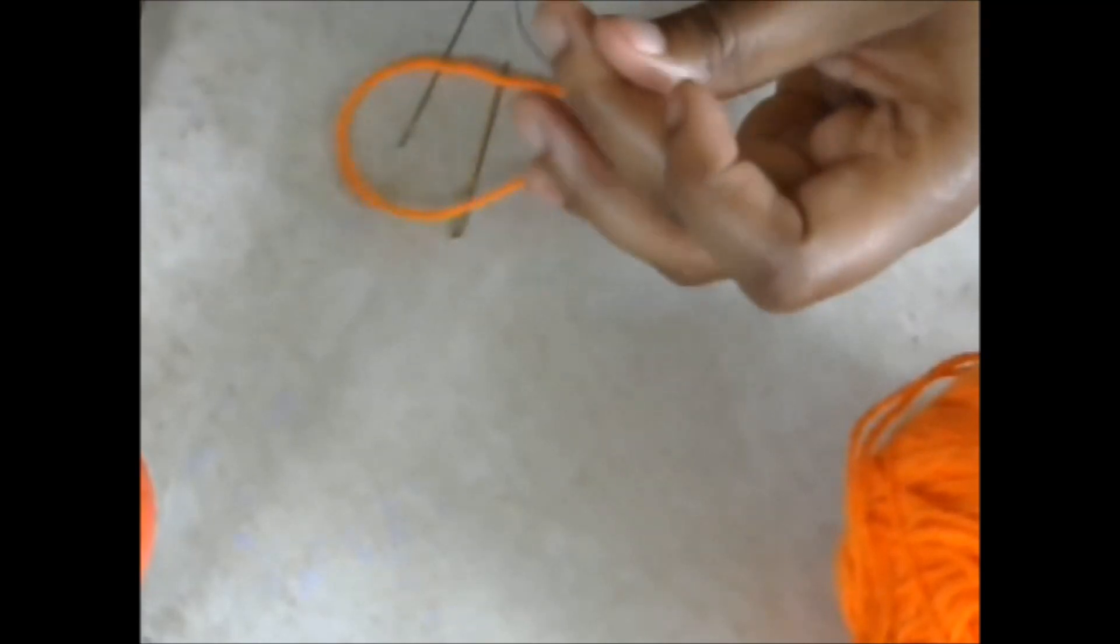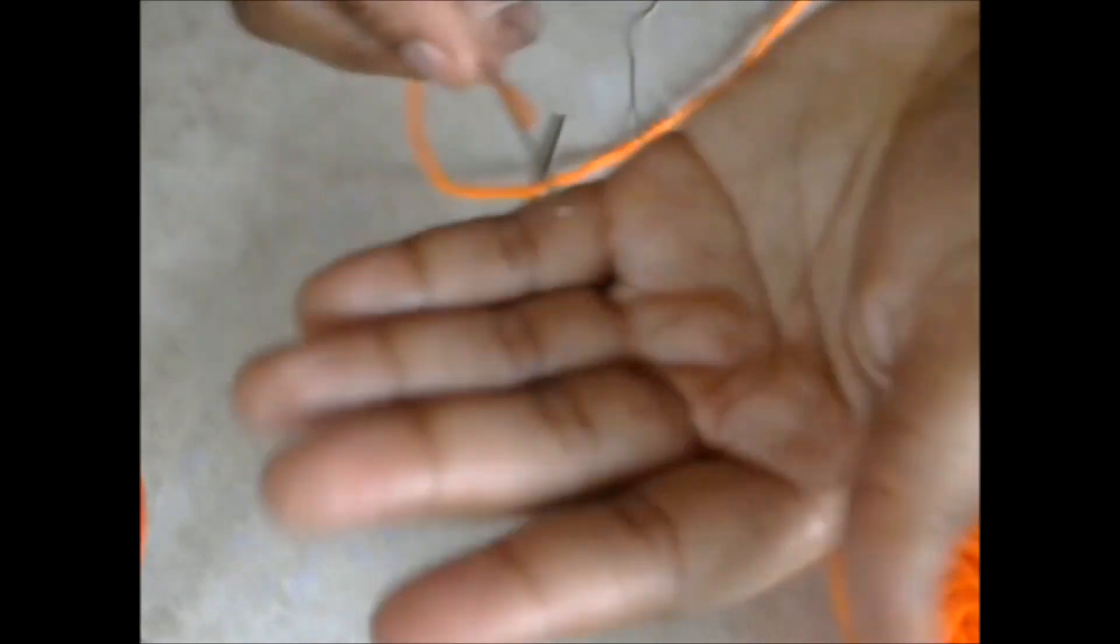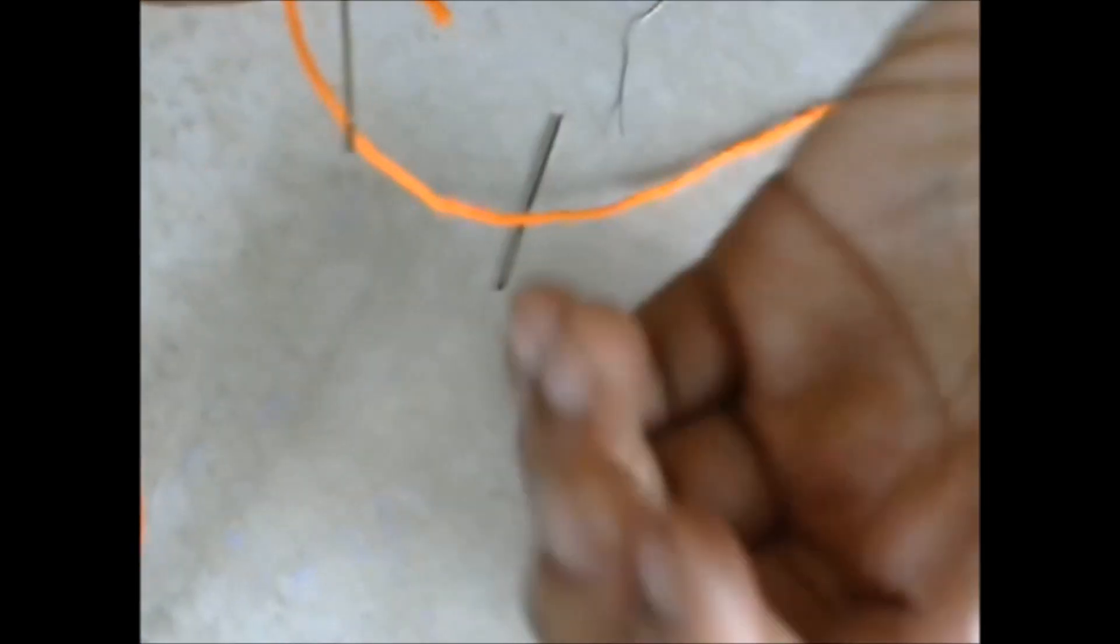You're going to take the needle that has the small eye, and you're going to just thread it through. I mean, you can do a really tiny eye with this tip that I'm showing you here.